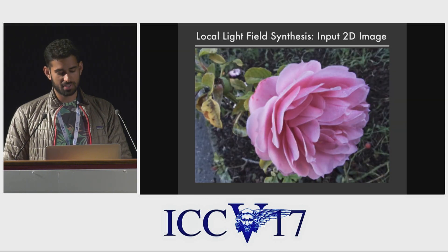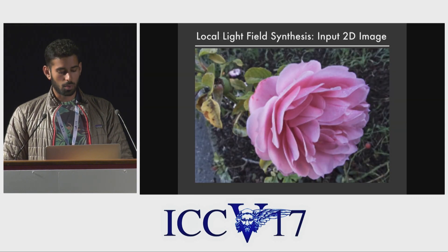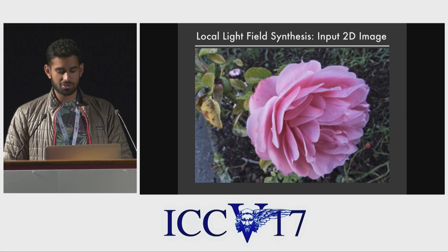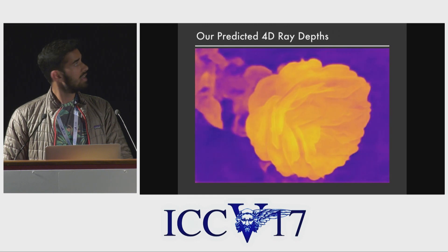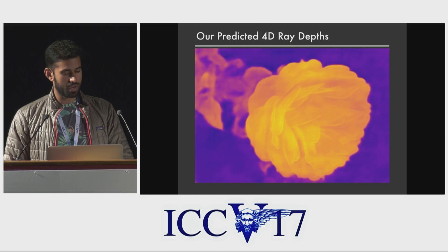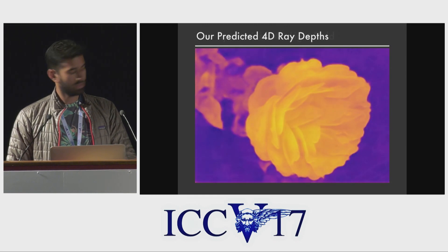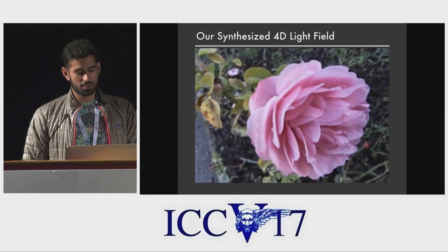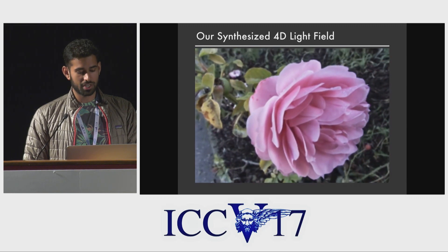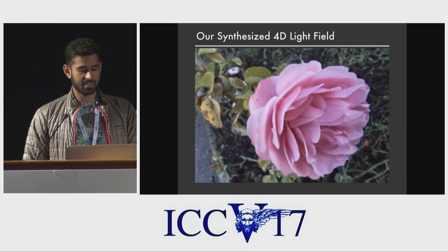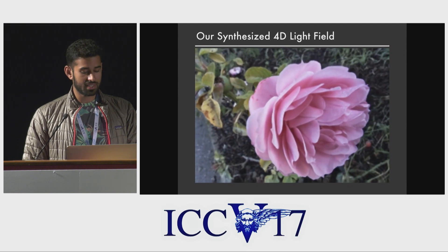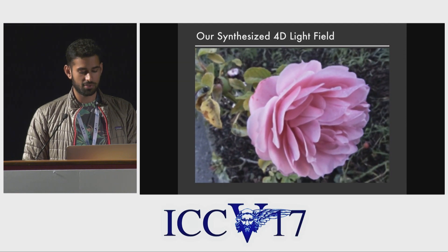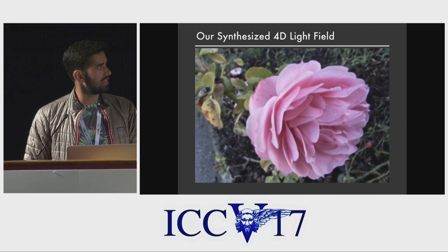We call this local light field synthesis, where we start with a single 2D image, such as the flower shown here, and simultaneously synthesize the depth of the scene along each ray and all views in a local neighborhood around the input view, visualized as an animation between views here. We can see that our synthesized views demonstrate realistic parallax and occlusion effects.